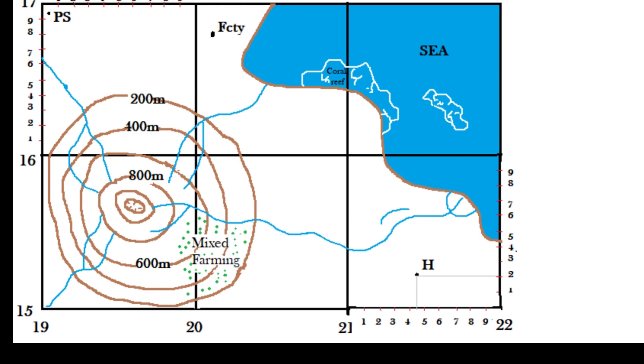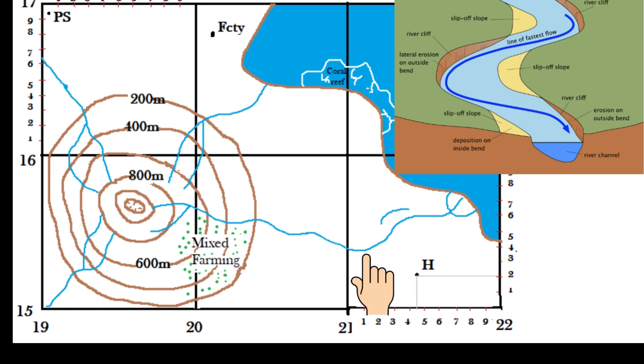If we examine the river which ends in grid square 2115 we will notice some fluvial features. For example, we notice the bending of the river close to easting 21. This bend in the river channel is called a meander. A meander has two distinct sides.